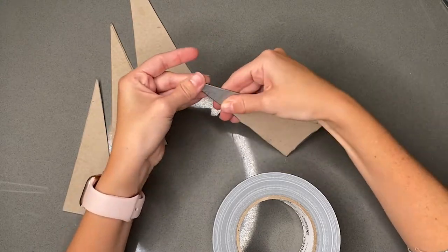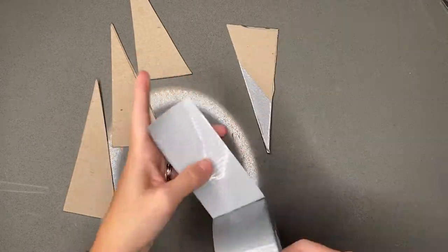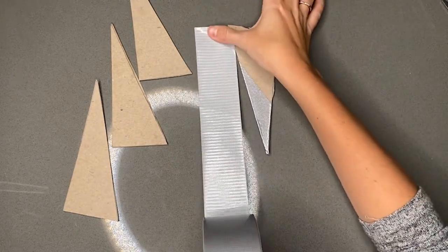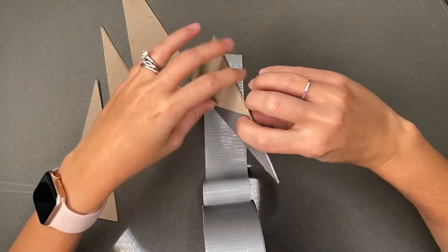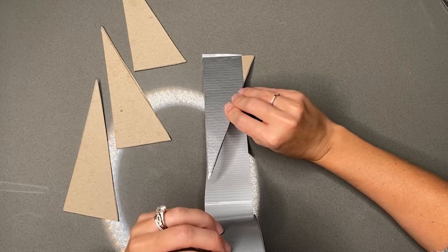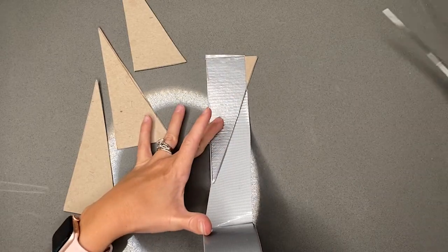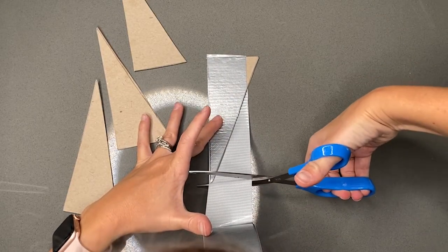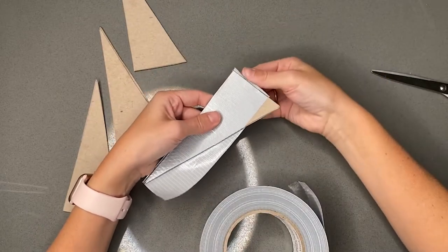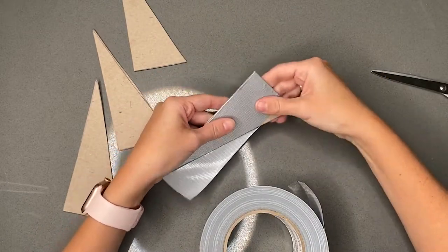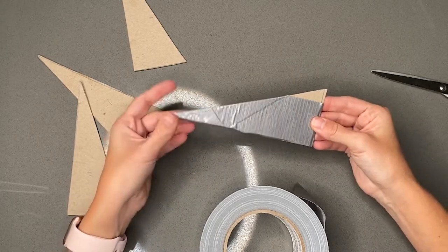And I want to keep this nice and smooth. So I'm going to wrap this around my fin. I want to try to avoid any bumps or bubbles so that it looks like this. Then I'm going to repeat on this side.